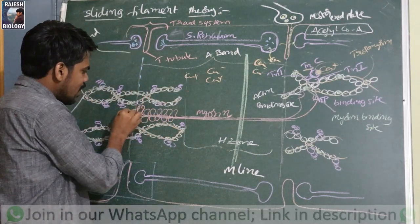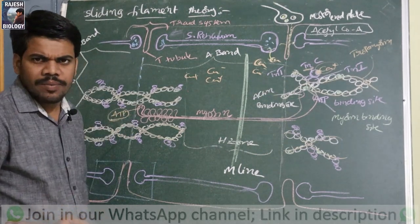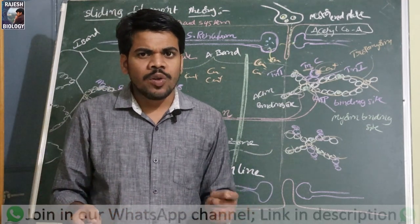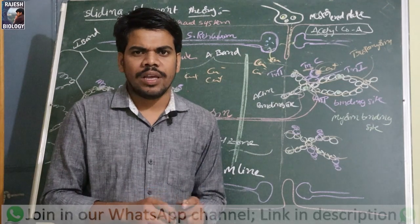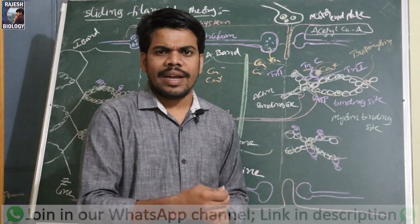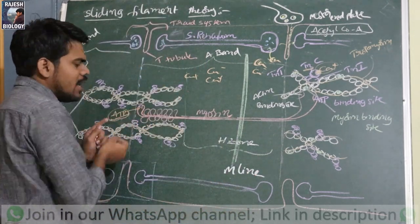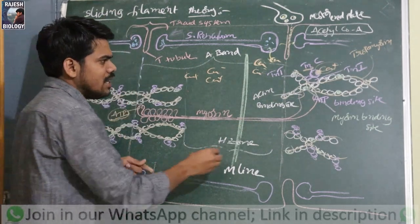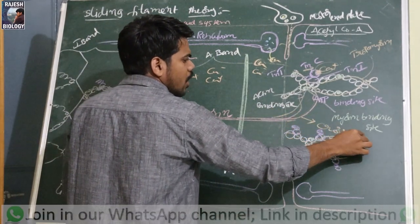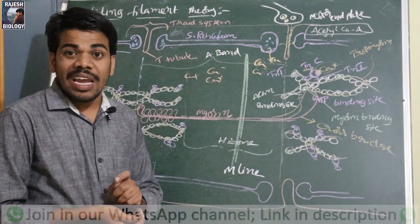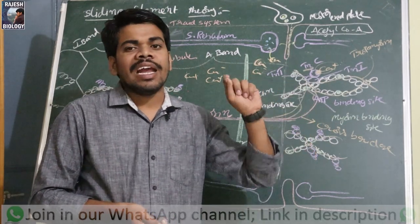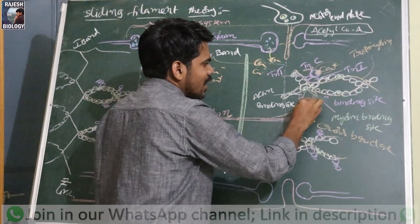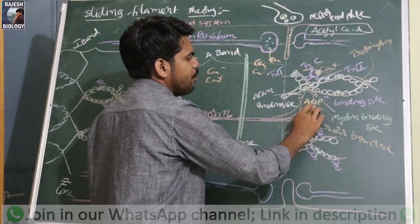The myosin head has two binding sites: one for actin and one for ATP. The muscle fiber has plenty of mitochondria which always produce ATP, so ATP is always bound to the myosin. Whenever the myosin binding sites are exposed, by utilizing this ATP energy, myosin forms a cross bridge. The myosin head acts like an ATPase — it hydrolyzes the ATP, which is converted into ADP and inorganic phosphate (Pi).